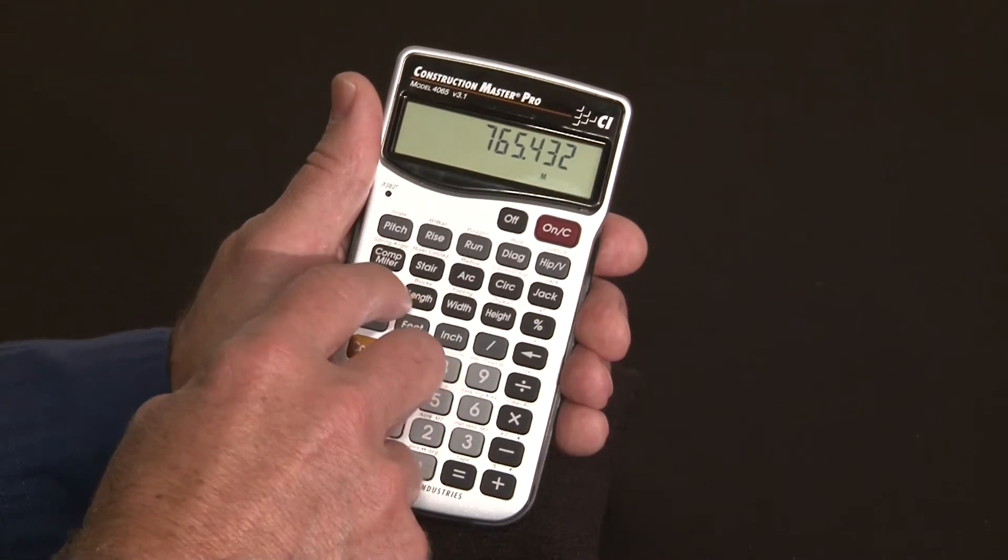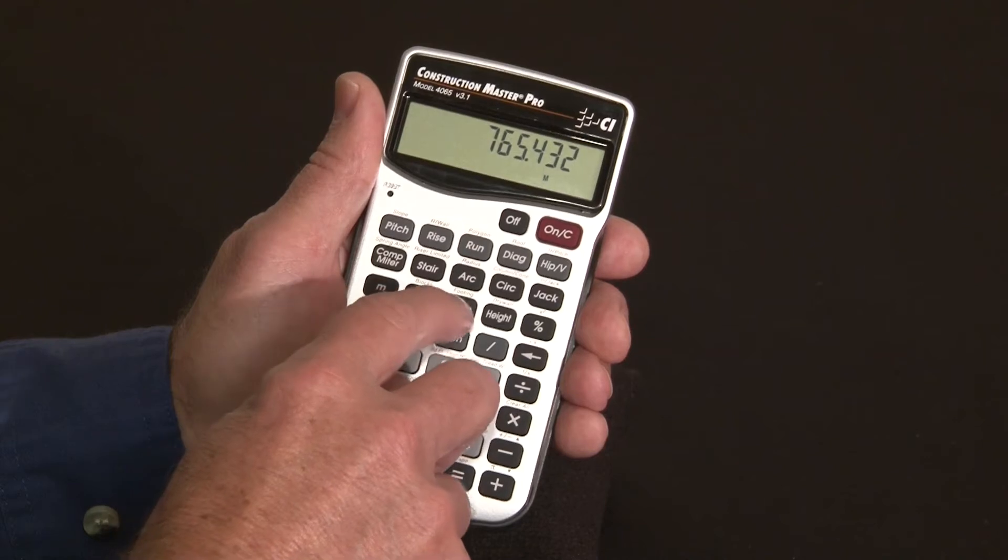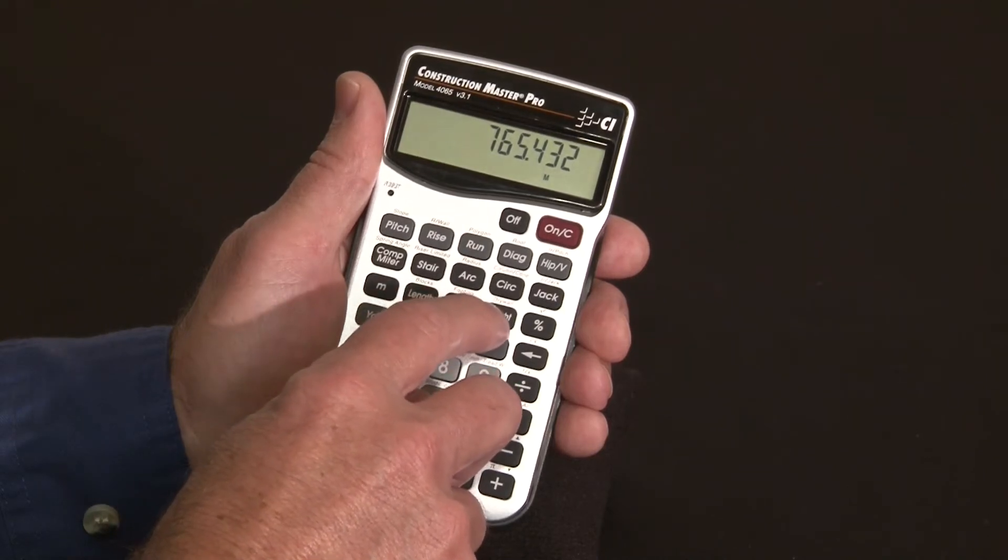Above this row key here, we have the blocks, tiles, pavers, footings, and drywall sheets.